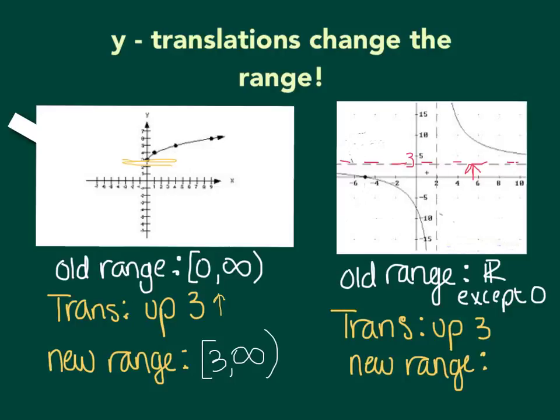The new range, therefore, is going to be all real numbers except positive 3. So since the asymptote went up to positive 3, that is no longer in the range. So notice the translation was positive 3, and the range is now except positive 3.